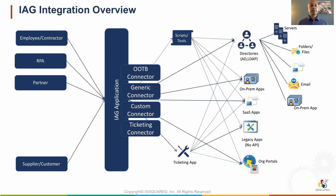Here are the key steps. First, aggregate the user profiles from different sources — HRMS systems, databases, or even files — into the IAG application. Then aggregate the account and access details from the systems and applications you want to manage. Correlate account and access data with the user profiles. Finally, automate and streamline IAG processes. The IAG application has connectors to connect to systems and applications and automate user and access management functions — both on-premise and in the cloud.